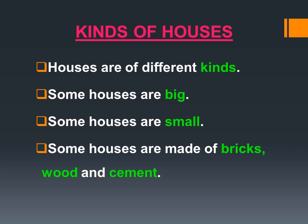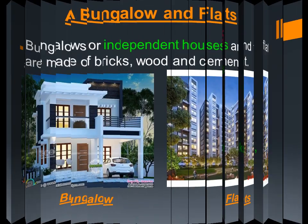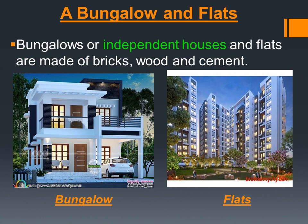Houses are of different kinds. Some houses are big and some houses are small. Some houses are made of bricks, wood, and cement — these are the materials used to build a house.